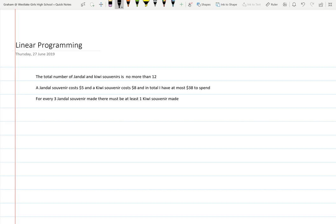...is no more than twelve. A Jandall souvenir costs five dollars and a Kiwi souvenir costs eight dollars, and for every three Jandall souvenirs made there must be at least one Kiwi souvenir made. So my two things that I'm working with is the number of Jandalls, x, and y is my number of Kiwis.